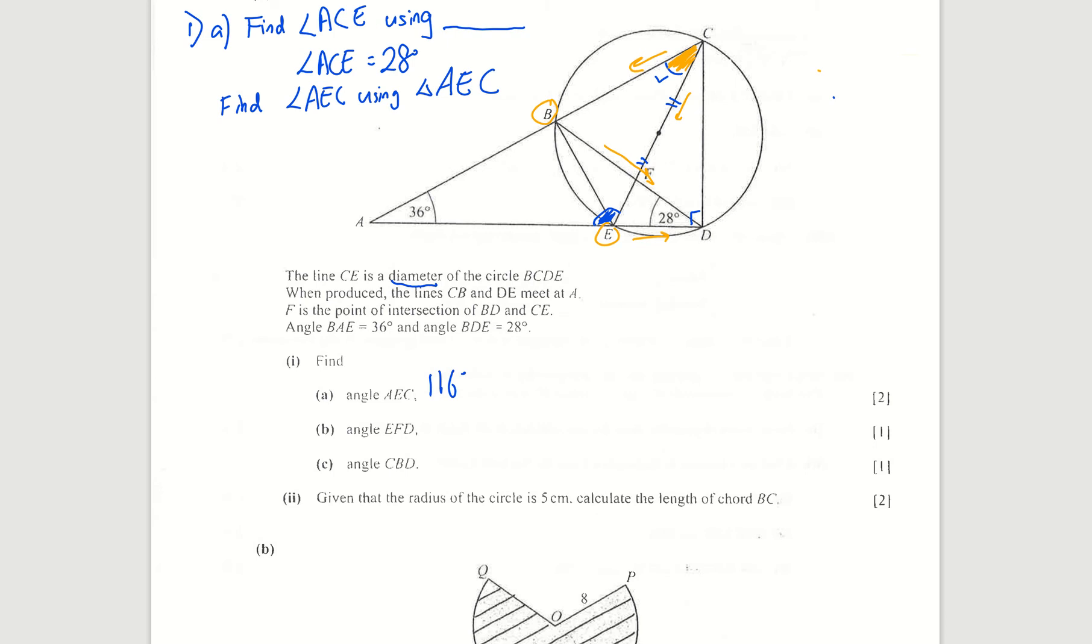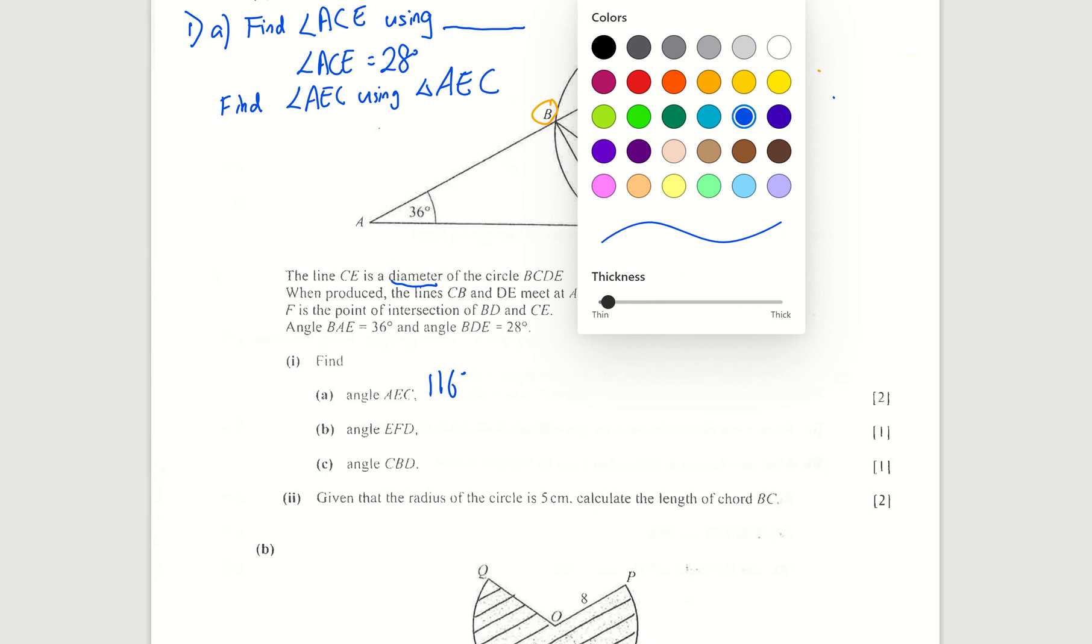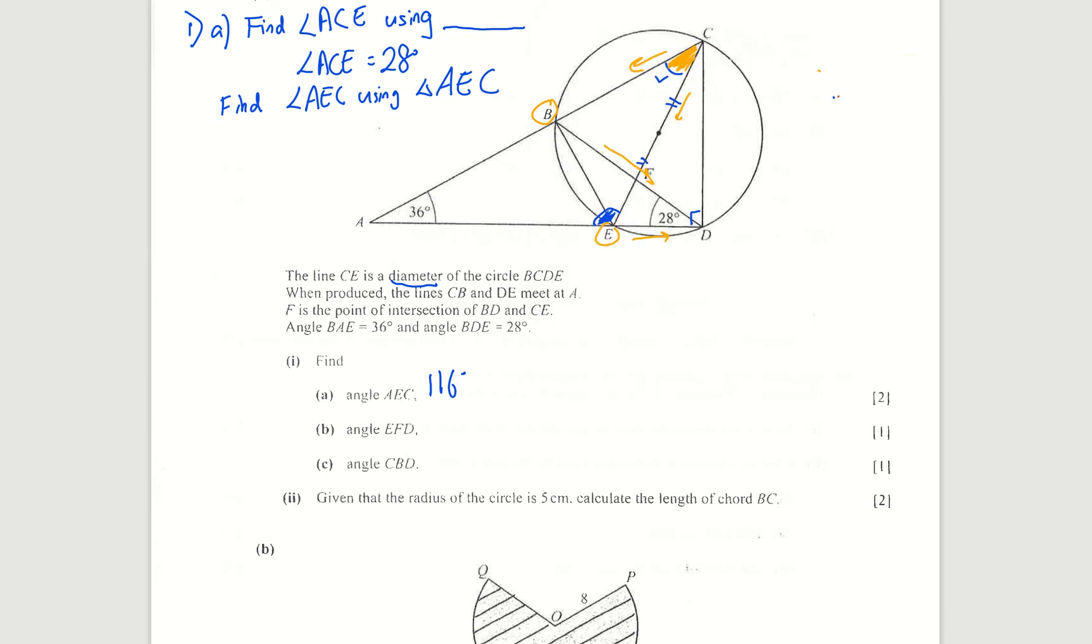Second one, EFD is this small angle here. All right, so to find the angle F, notice that F is not in the center, not in the circumference of the circle. So usually you have to use sum of angles in triangle.